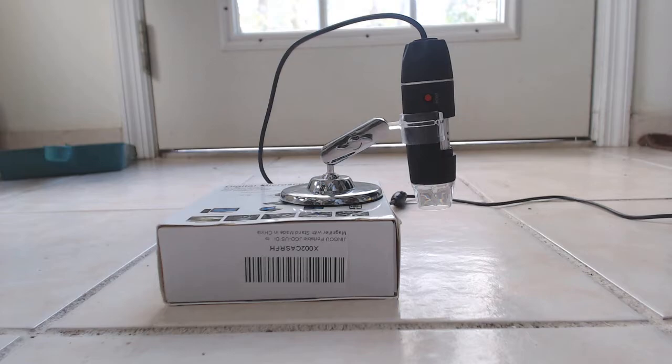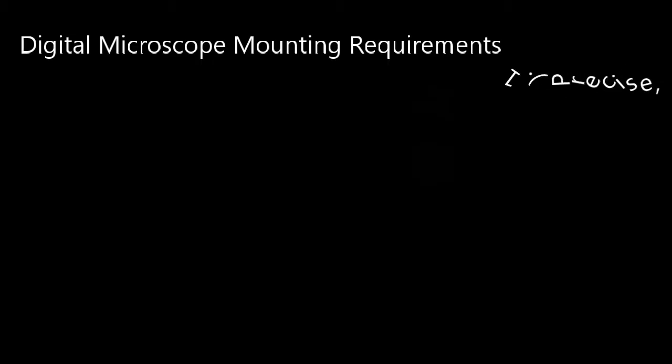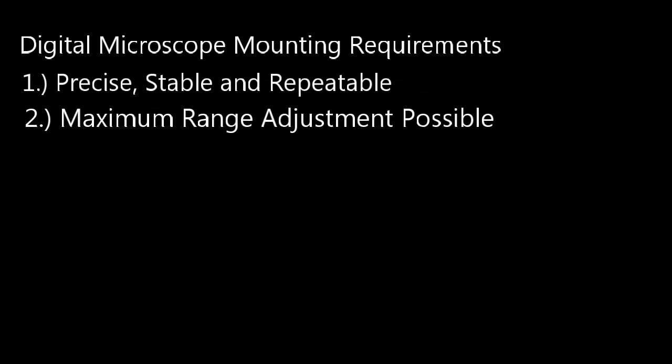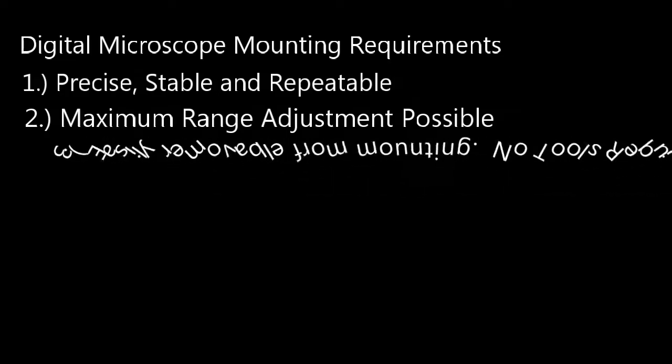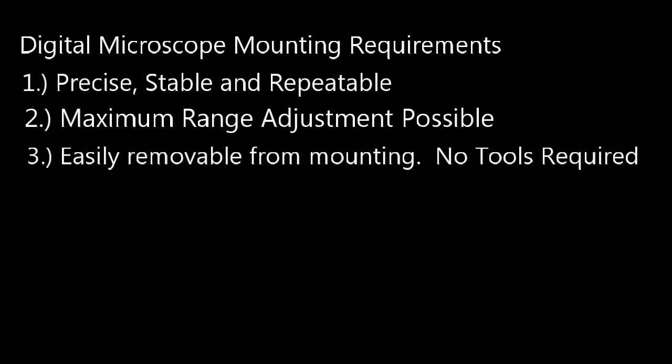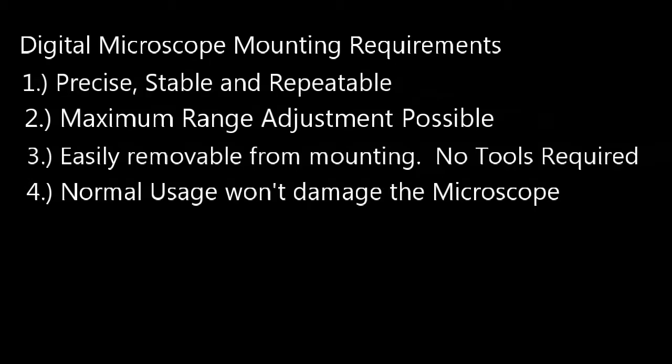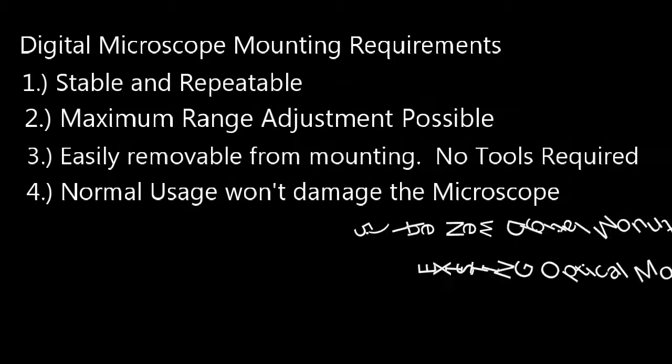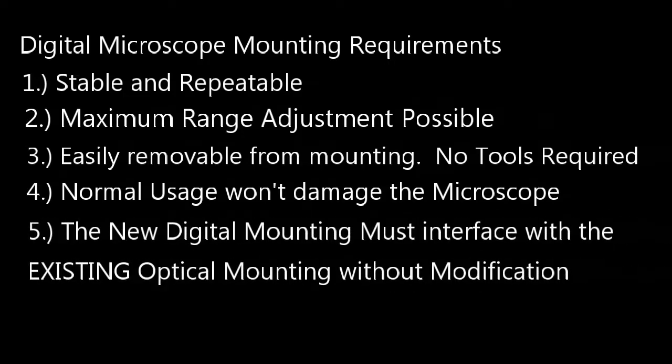The number one item on my list of things to have with a digital microscope mounting is precision, stability, and repeatability. Second item is to have the maximum possible adjustability and range of magnification. Next the microscope should be easily removable from the mounting with no tools. I want to be able to safely store the digital microscope or switch to a different mounting. Next normal usage won't damage the microscope. And lastly if I decide I want my optical microscope back I'll be able to change it back fairly quickly because I'm not going to modify the existing mounting. I'm just taking out the optical turret and replacing it with the mounting for the digital microscope.